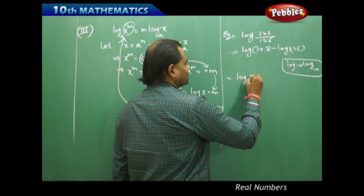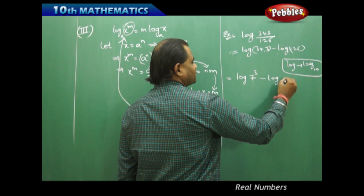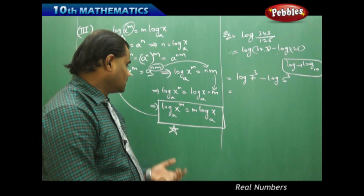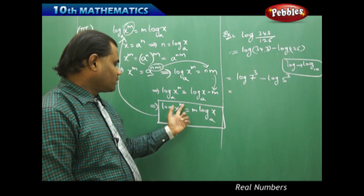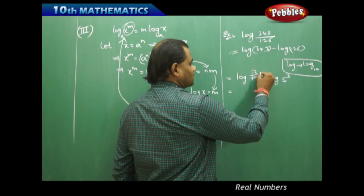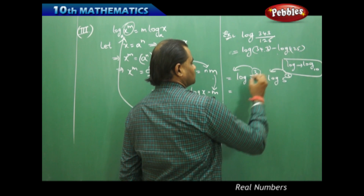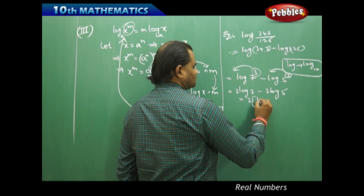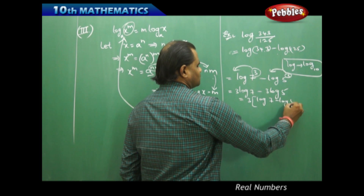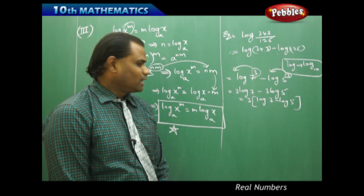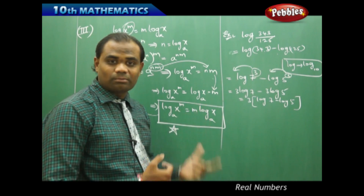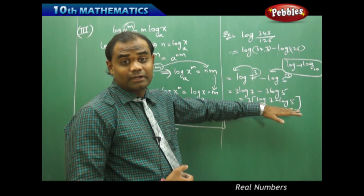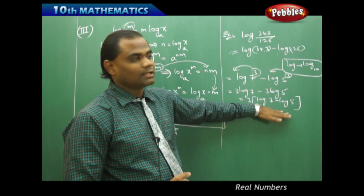So this being log 343 base 10 minus log 125 base 10 can be further simplified, because 343 can be written as 7 cubed, and 125 can be written as 5 cubed. Using the third law of logarithms, log(x^m) equals m·log x, this 3 comes out: giving 3·log 7 minus 3·log 5. This cannot be simplified further, so this is the final answer for the given problem.